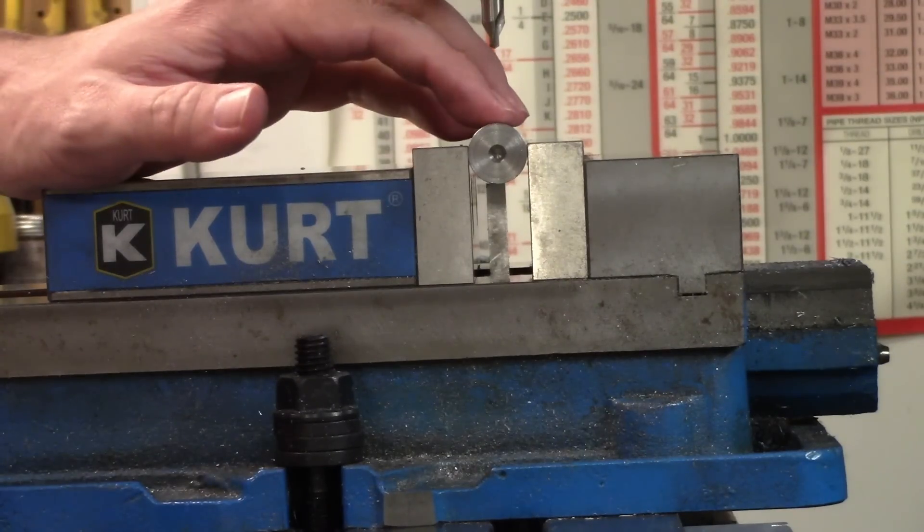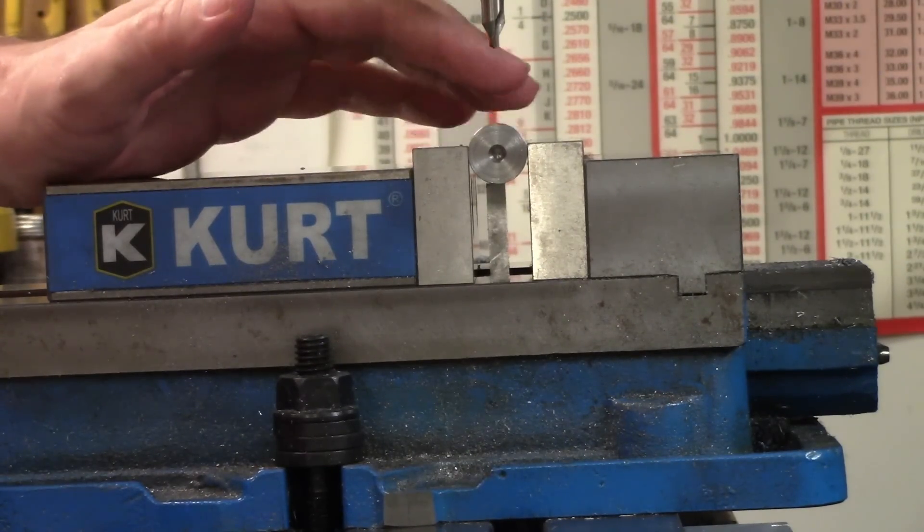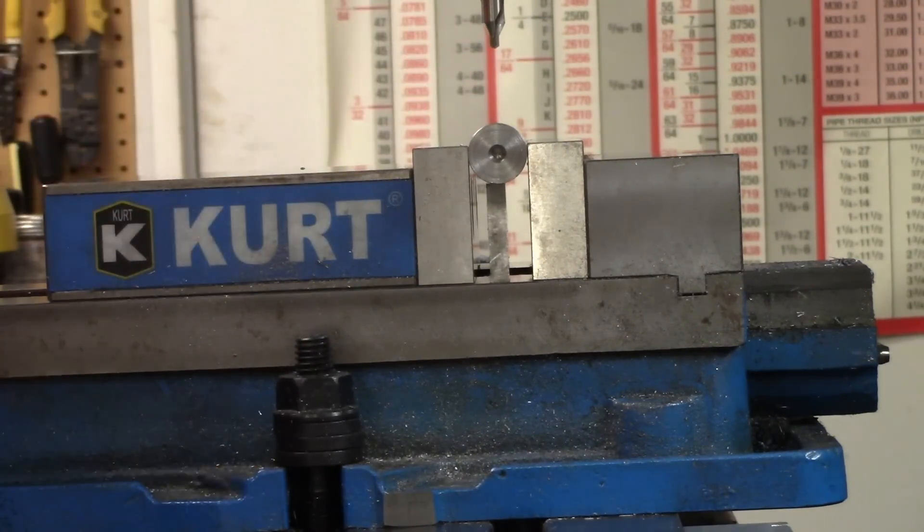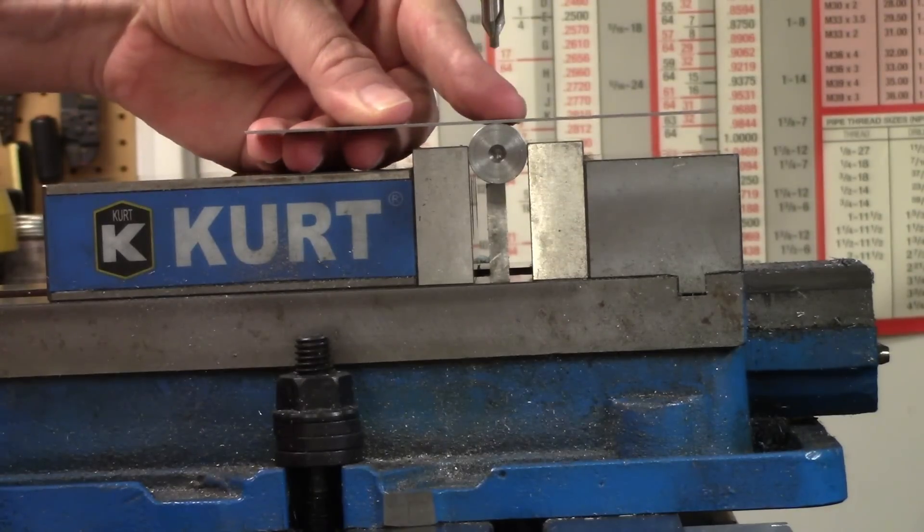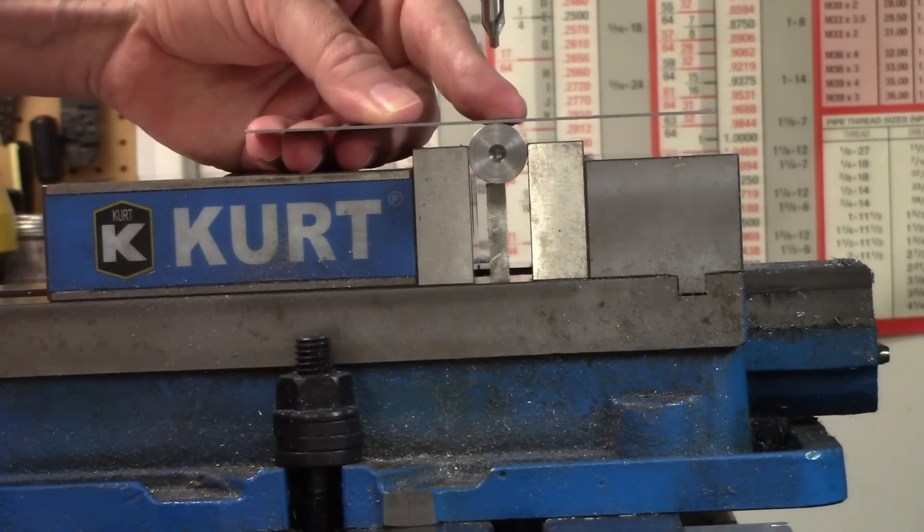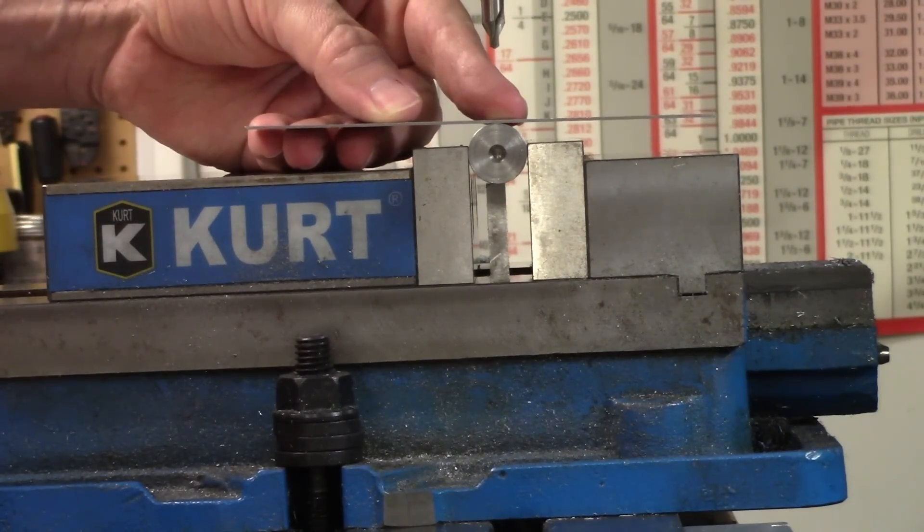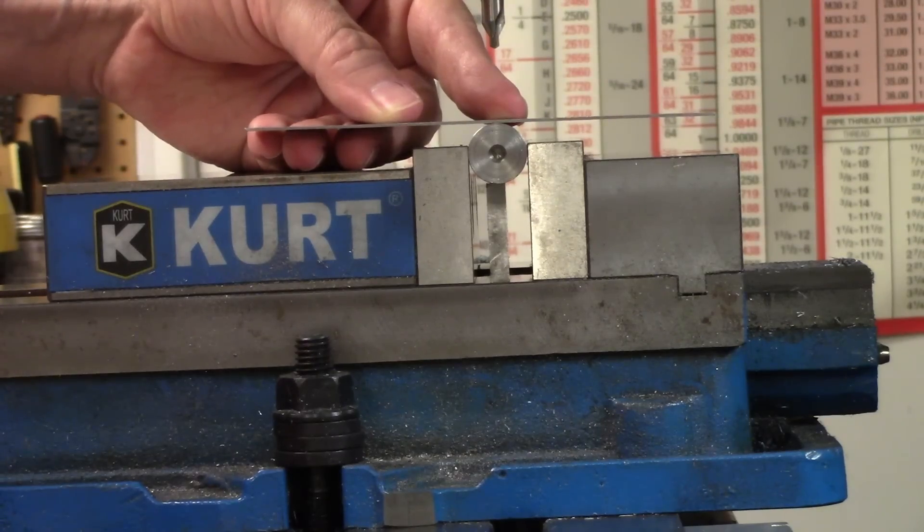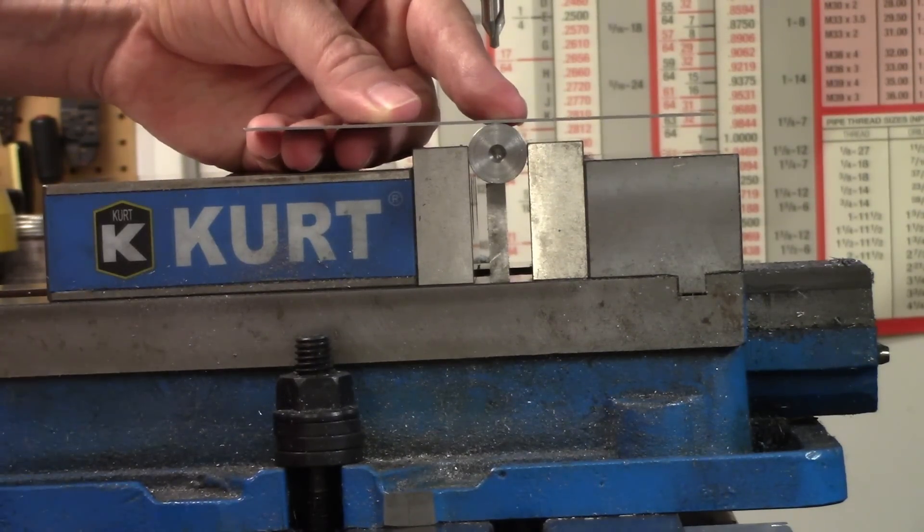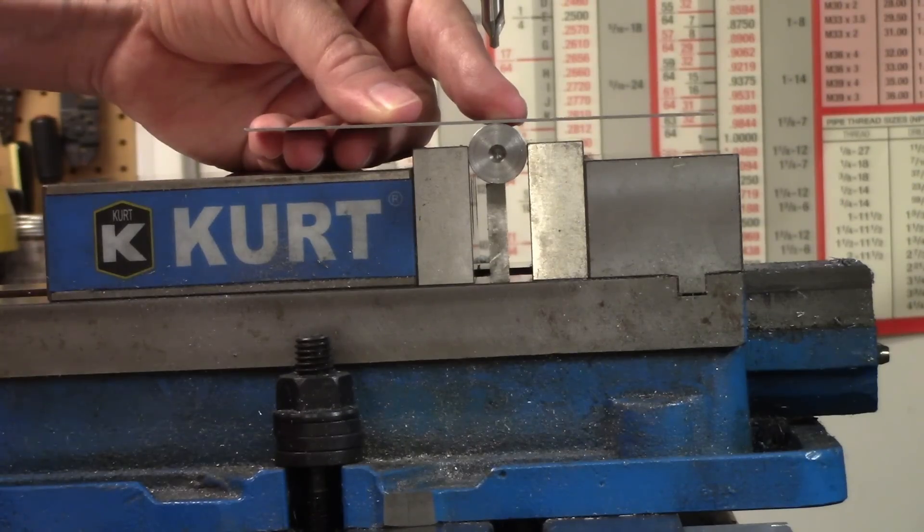Now that I have the center found on the part and that's marked as zero in the digital readout, I'm going to put the scale on here and test it ten different times. Each time I'll move the Y axis over some random amount, just turn the handle a little bit, and then I'm going to see how close I can get to actually centered. I won't look at the digital readout until I think that it's actually centered and then I'll look up there and see how far off I am.